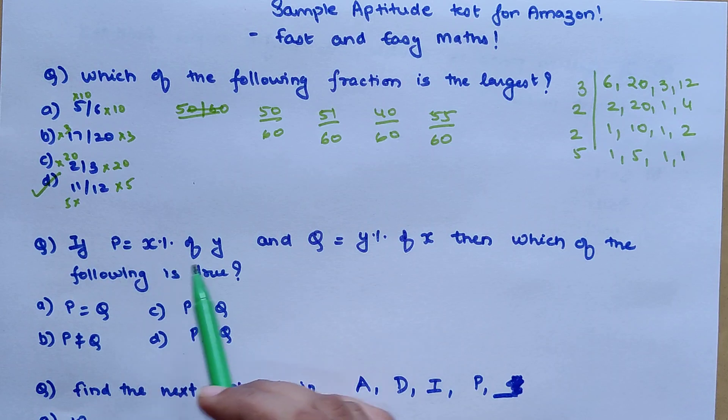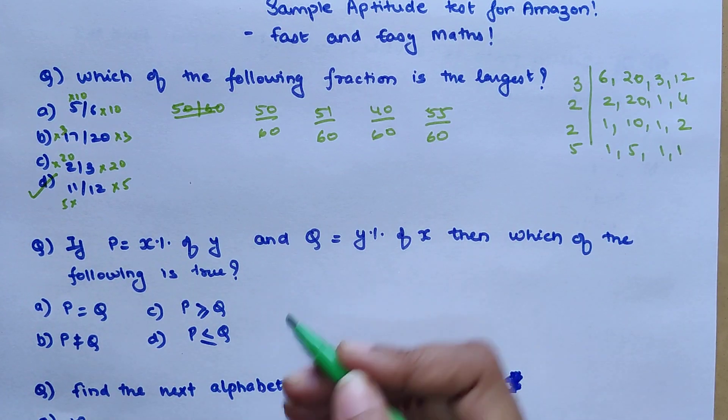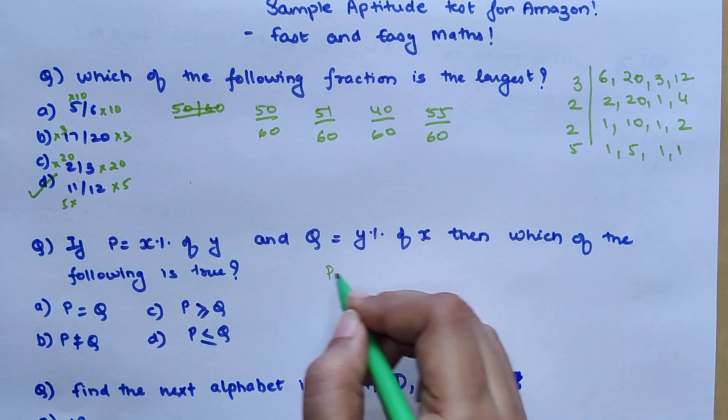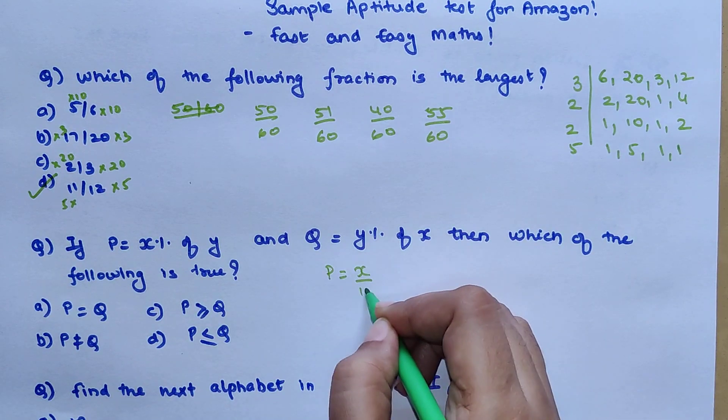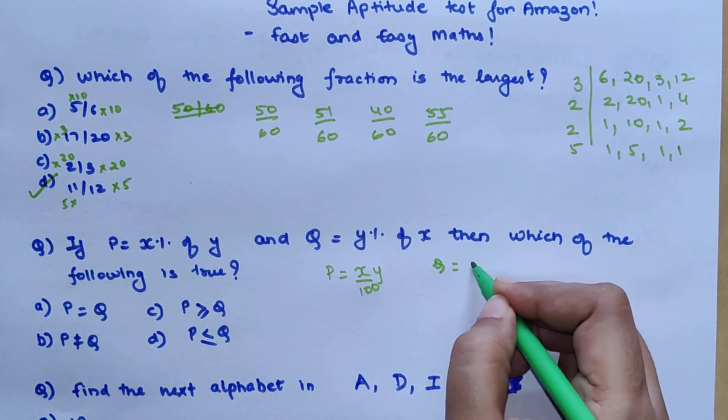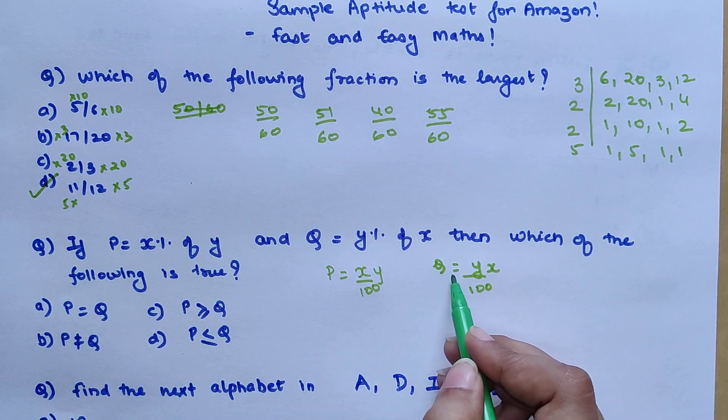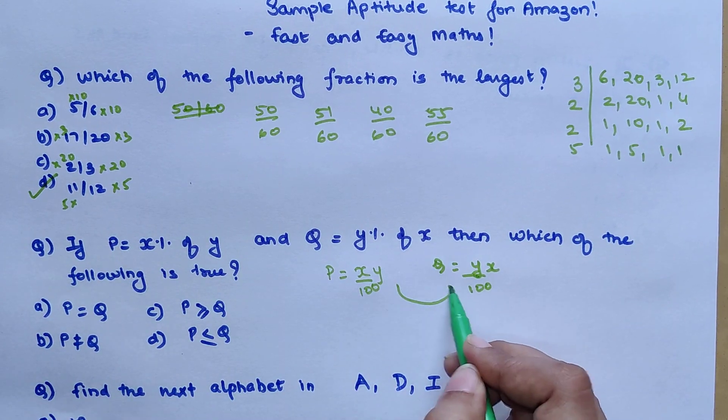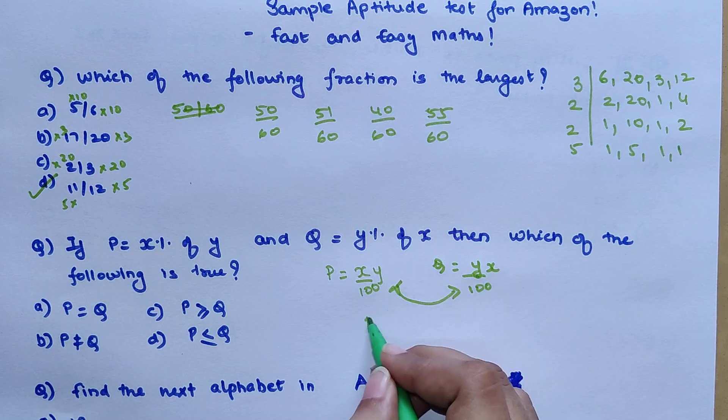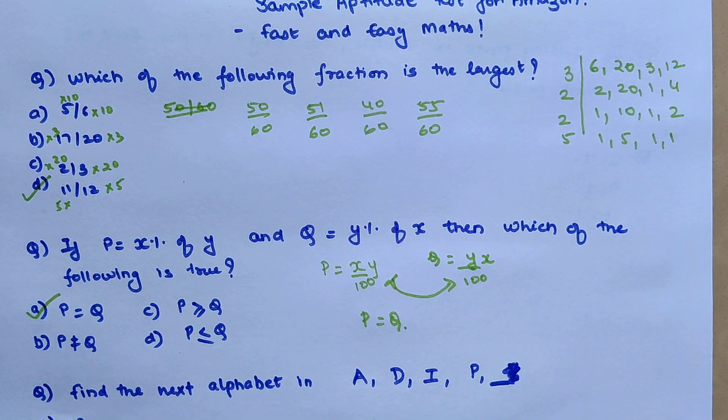The next question is: if P is equals to x percent of y and Q is equals to y percent of x, then which of the following is true? Please understand, P is equals to x upon 100 into y, so xy. Q is equals to y upon 100 into x, which is yx. Both of these values are same, so I can directly say that P is equals to Q. So option A is my correct option.